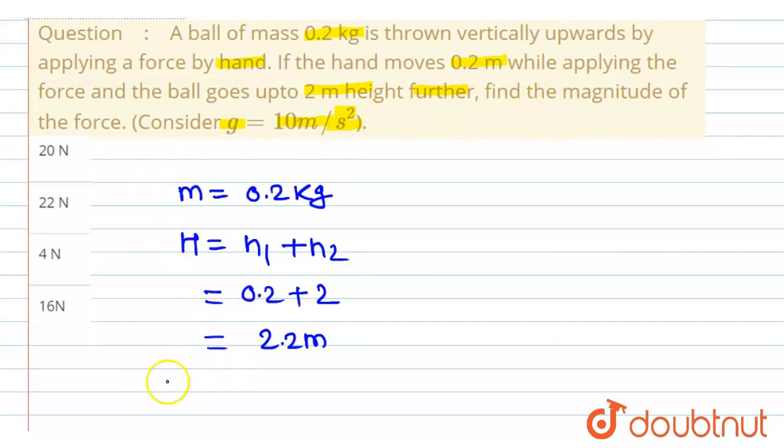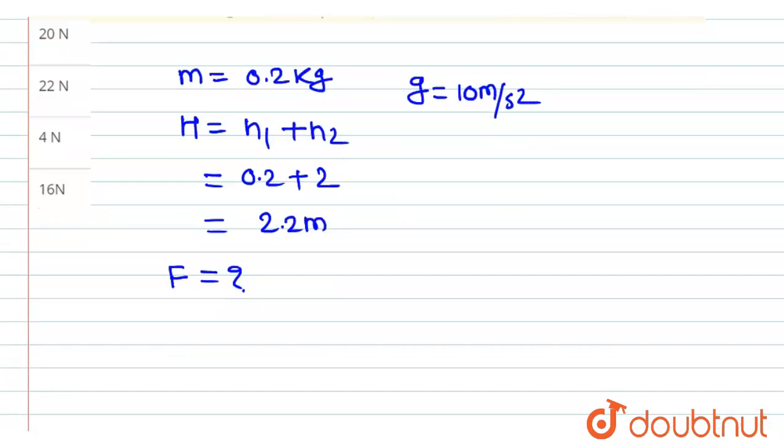Now we have to determine the value of magnitude of force and we have to take the value of gravity as 10 meter per second square. Now we know that here the value of work done will be stored in the form of potential energy.